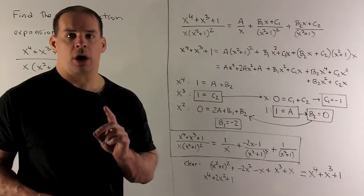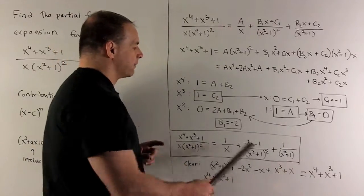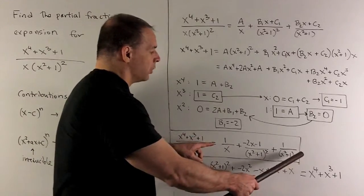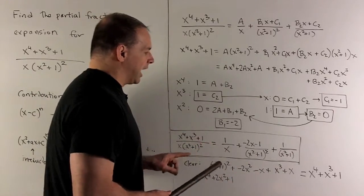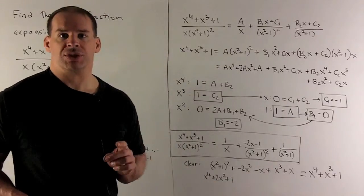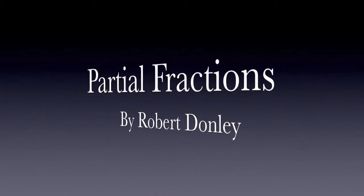Now, of course, you check your work. So you're just going to multiply through denominators on both sides, clear everything out. And then you'll note on this side, when you combine everything, you're going to get your x to the fourth plus x cubed plus 1 as promised. So it checks out.